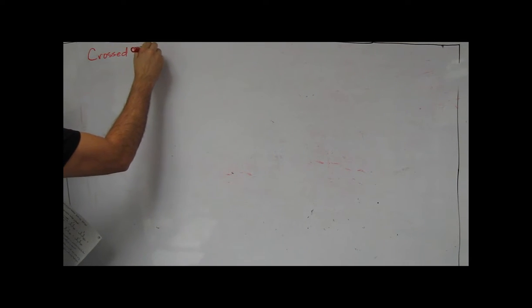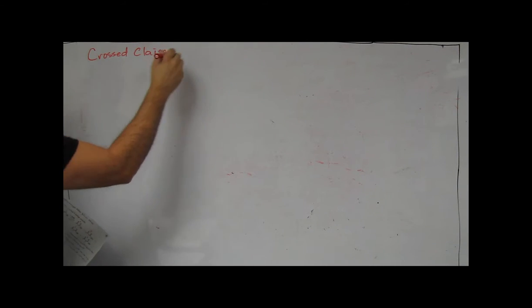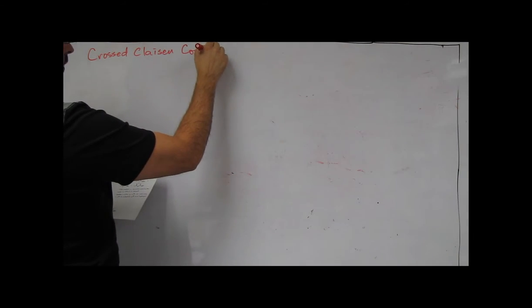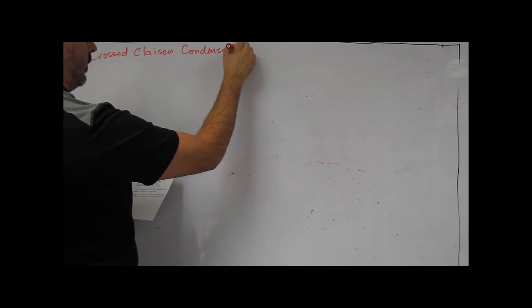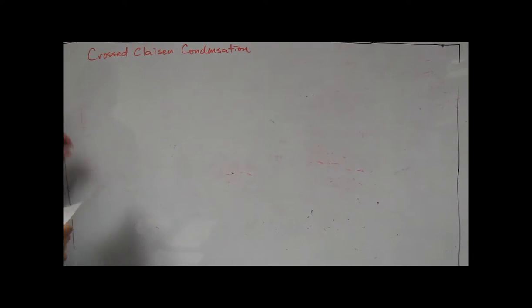In this video we're going to look at the crossed Claisen condensation. So this is different from the prior video where we looked at just the Claisen condensation, which was a self-condensation of an ester. Now we're going to look at when you have two different esters, what are the potential products that you can form.